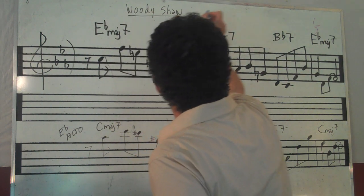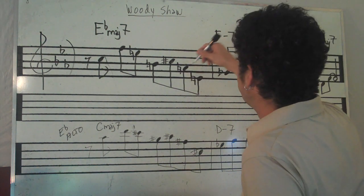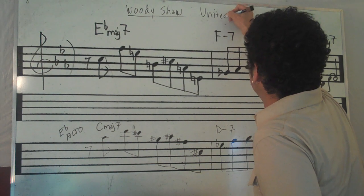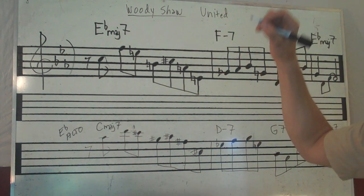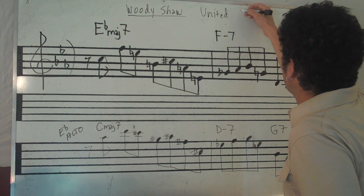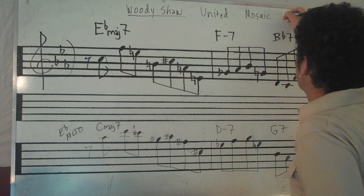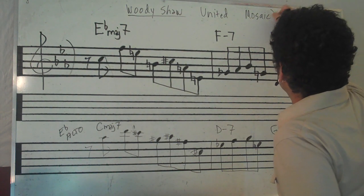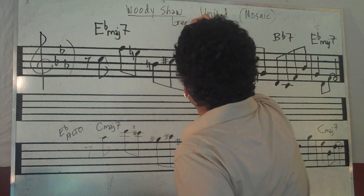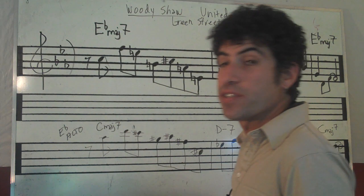So I wanted to share with you just a little piece of what I'm talking about. This is from an album called United, and was re-released on a mosaic box set for Woody Shaw. This song is called Green Street Caper, and it's based on the changes to On Green Dolphin Street.